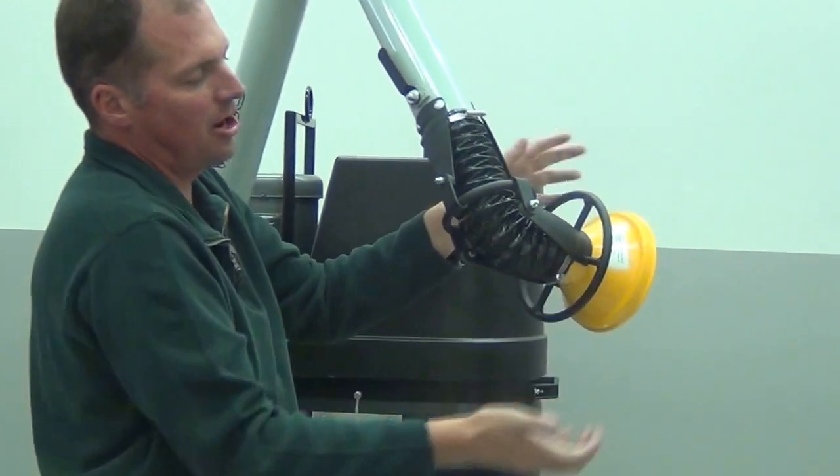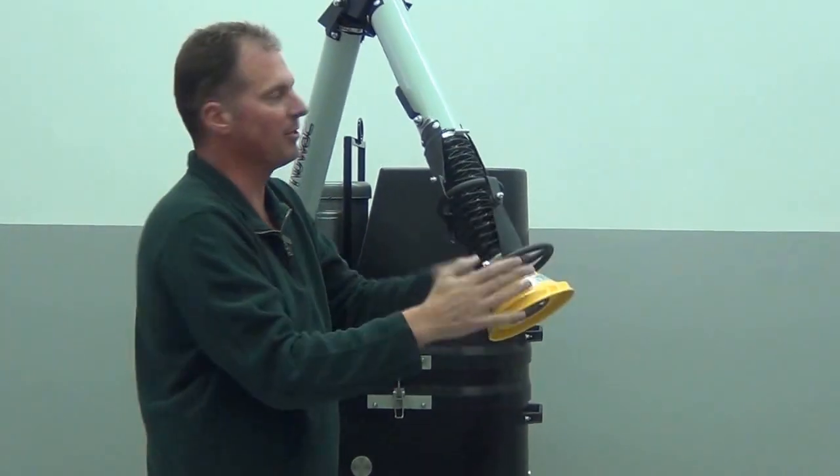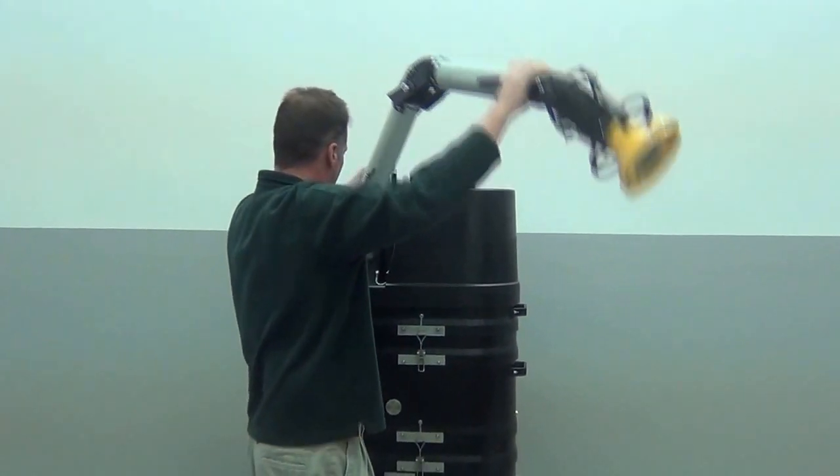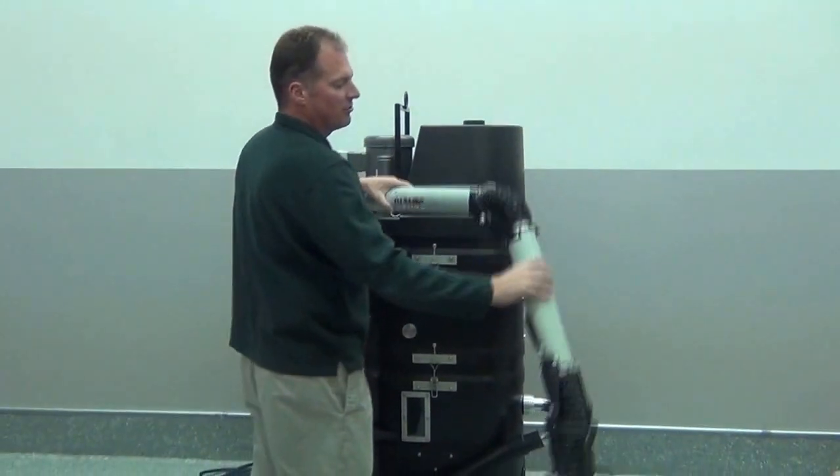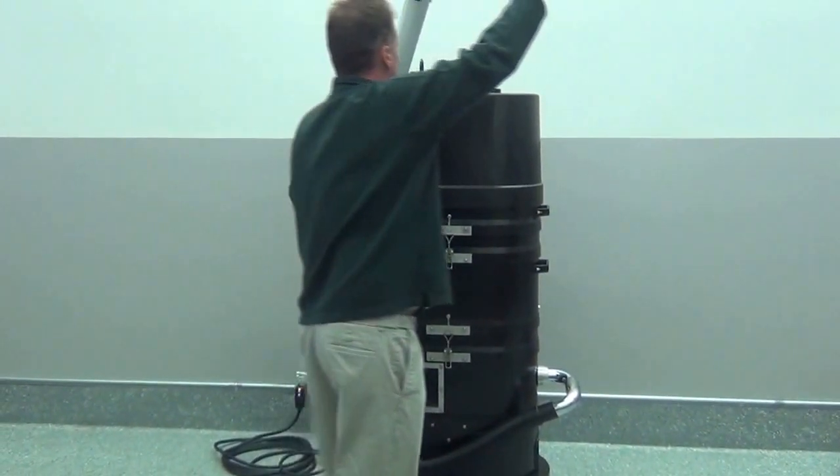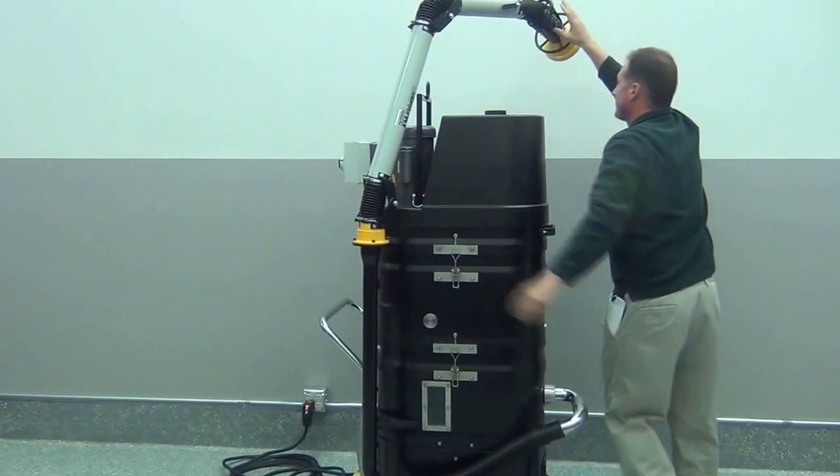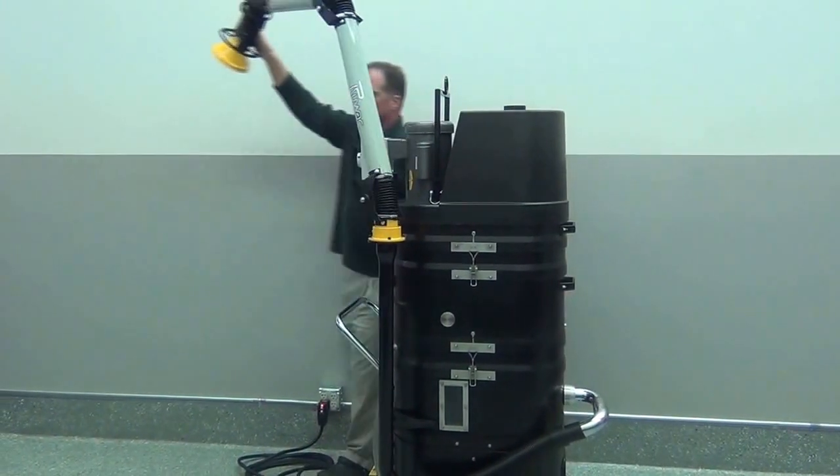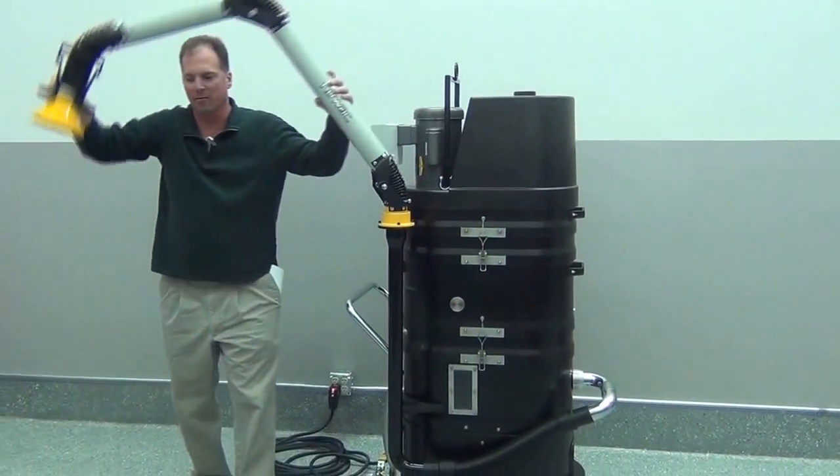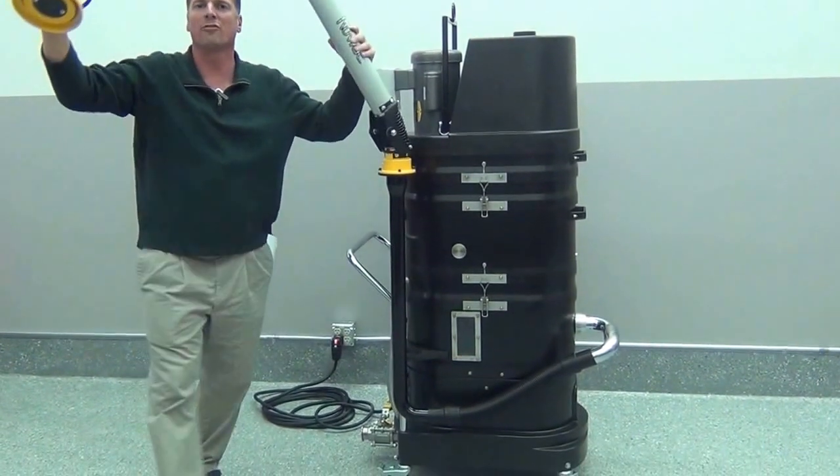You'll see that the nozzles are extremely flexible and stay in place, so you can access just about anywhere around the machine. You can go all 360 degrees around the vacuum, so you can come off the back of the machine or the front of the machine.